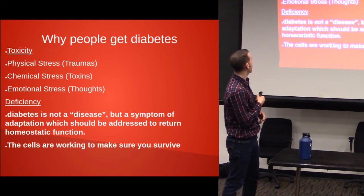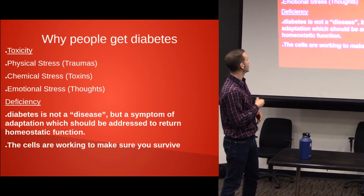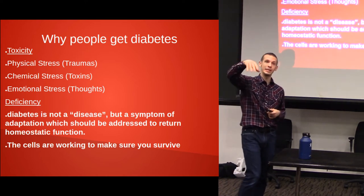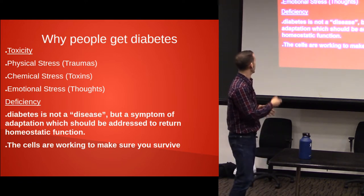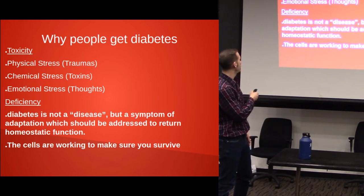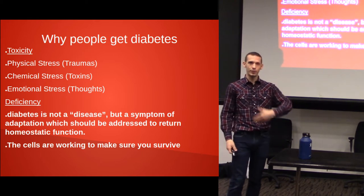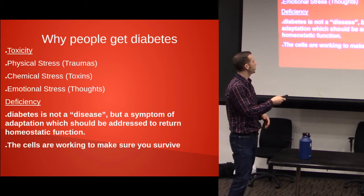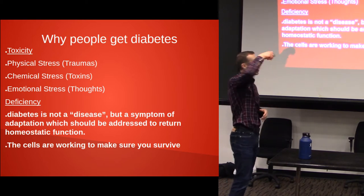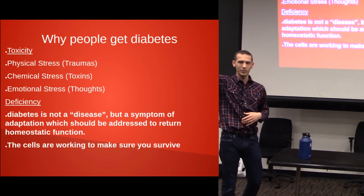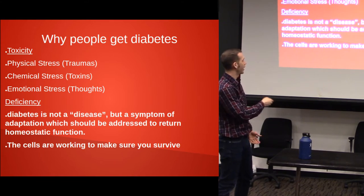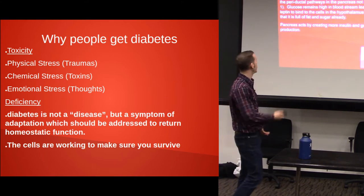Why people get diabetes: physical stresses, chemical stresses, and emotional stresses. Those are all the types of things that raise blood sugar and lead to insulin insensitivity. Therefore, diabetes is not just a disease you get — it's actually a symptom of adaptation. Your body is adapting to what's happening in the environment, which should be addressed to return homeostatic function. The idea is: address the causes, stop treating symptoms, and then you'll have your solution. The cells are just doing their job, making sure you survive.